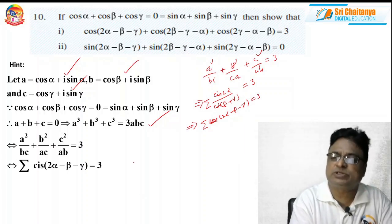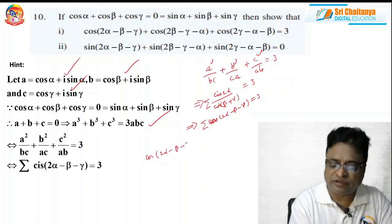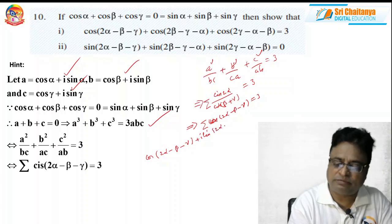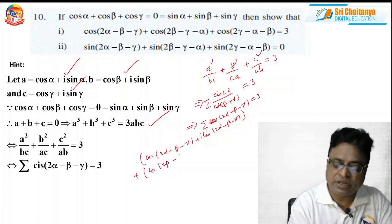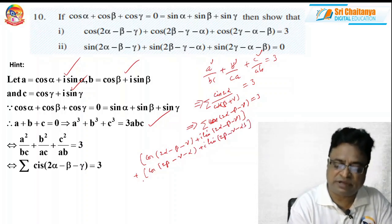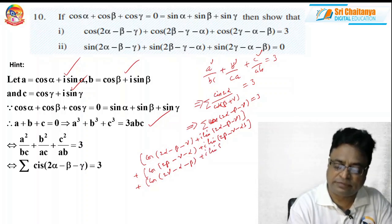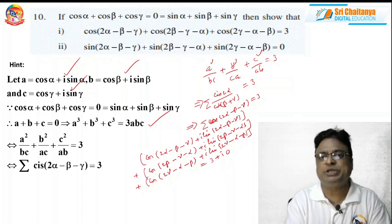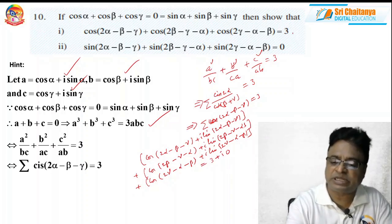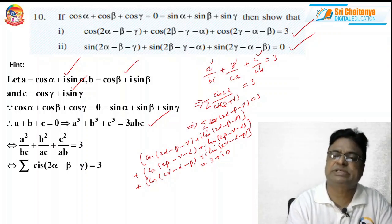So, cis(2α − β − γ) = 3, which means cos(2α − β − γ) + i·sin(2α − β − γ), summed cyclically, equals 3 + i·0. Now equate real and imaginary parts. If you equate the real part, the answer is 3; the cosine terms give answer 3. Whereas for sine terms you will get answer 0. Please don't get any confusion.